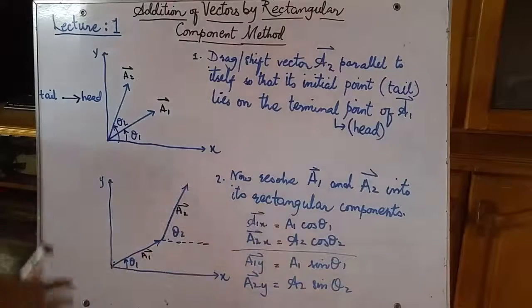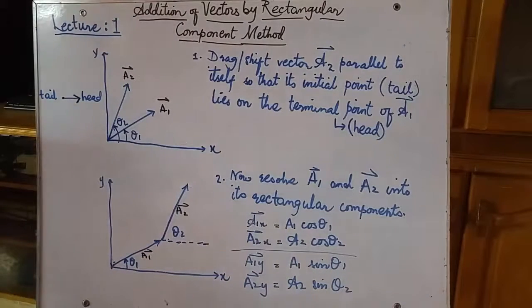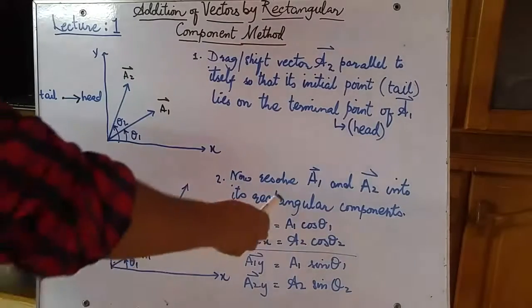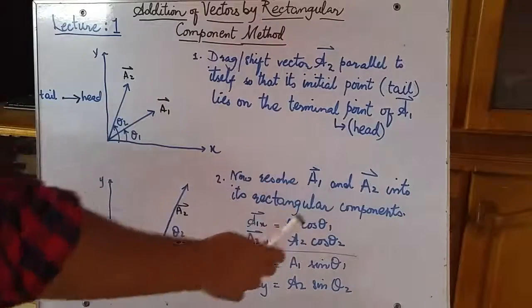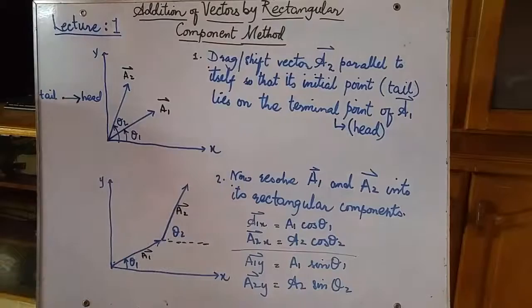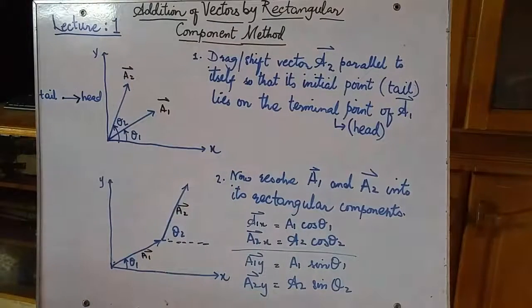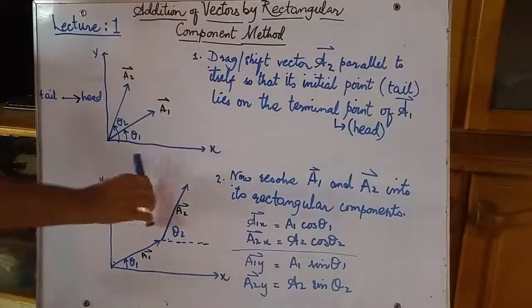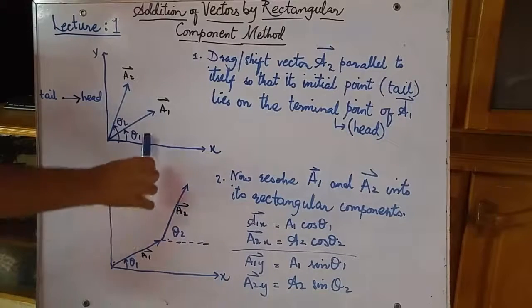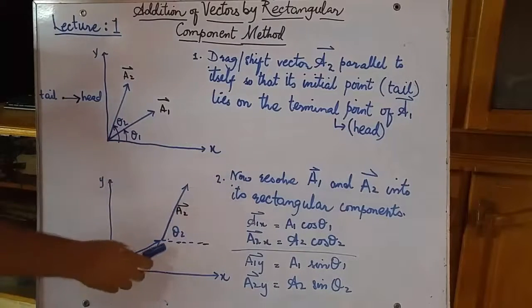We need to resolve these vectors into x-component and y-component. And you already know how to resolve the components—revise it. Resolving A1 and A2 into rectangular components. Suppose, how to resolve the vectors? I can show you here. Suppose it is a torch—this marker is a torch. When I put this marker on this stick, suppose this vector is a stick, the light will fall on the stick and its shadow will be formed on the x-axis.